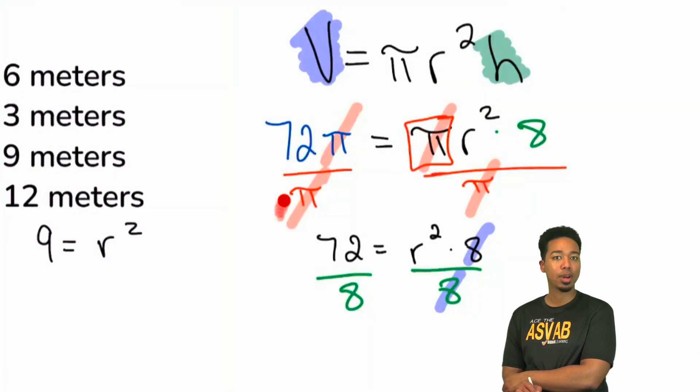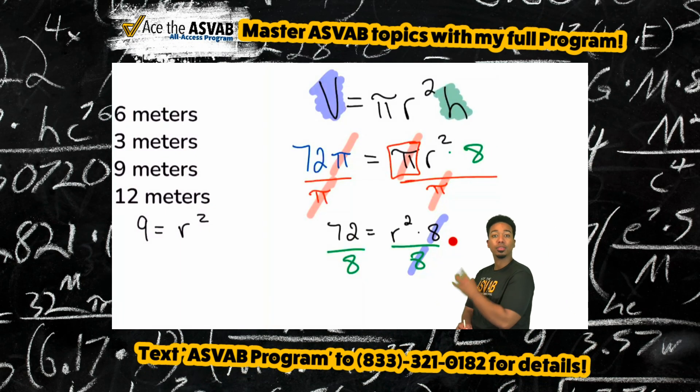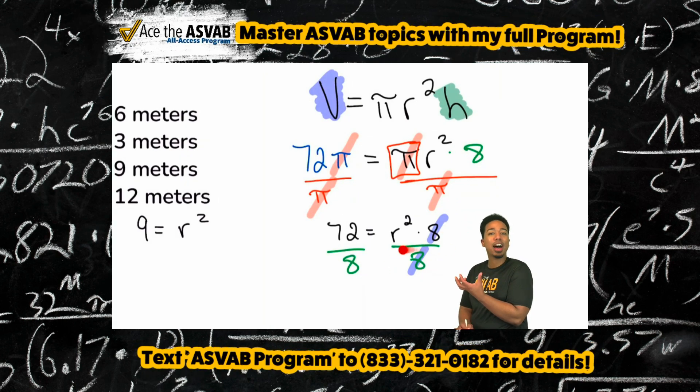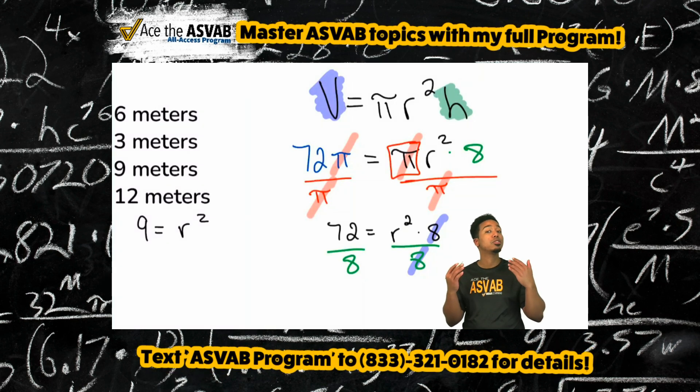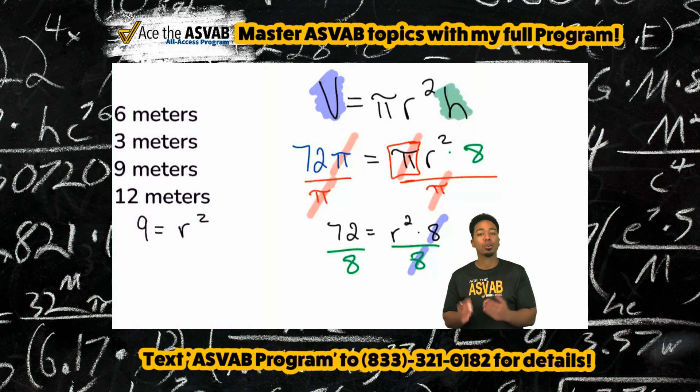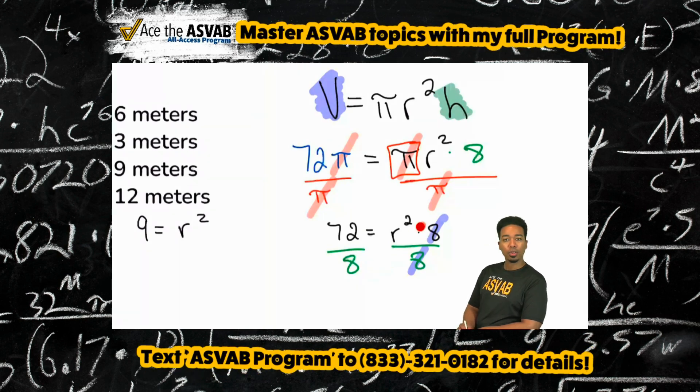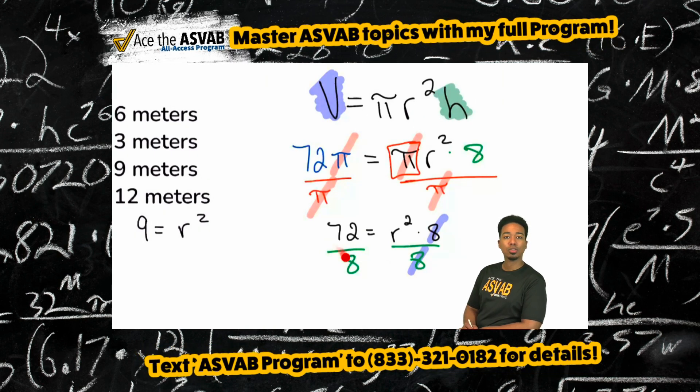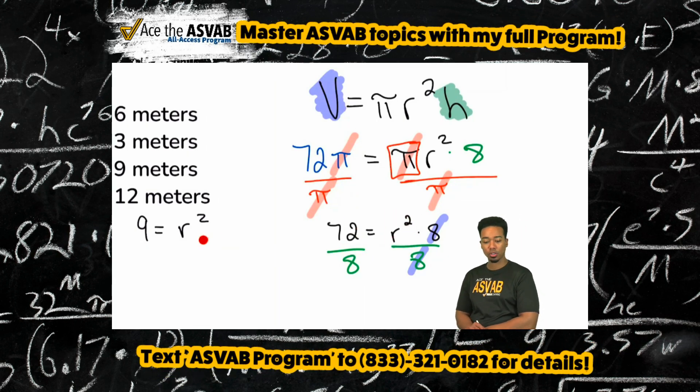That's how this happened right there in red. And then when we got over here, now we see that we've got to get rid of that times 8. The opposite of multiplying by 8 is dividing by 8. And whatever we do to one side, we must do to the other. So we have to be careful there. We have to be precise. We were. Cancels out over here. And 72 divided by 8, that's 9. So right now we have 9 equals r squared.